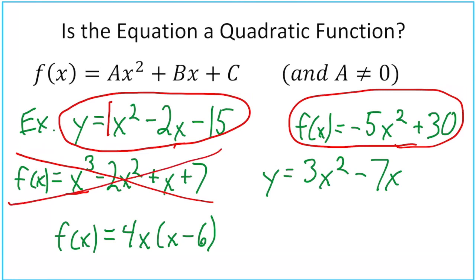That's not quadratic because you can't have an x³. Next: y = 3x² - 7x. That is quadratic. The c value on that is zero.